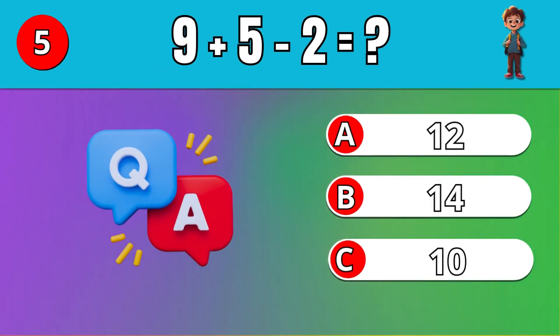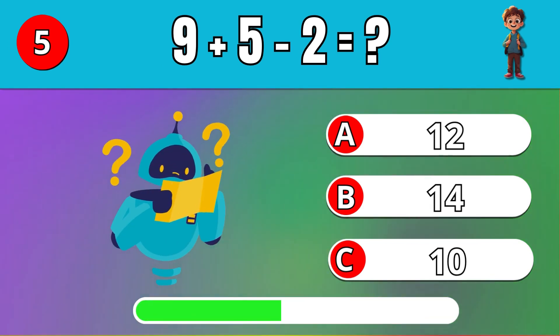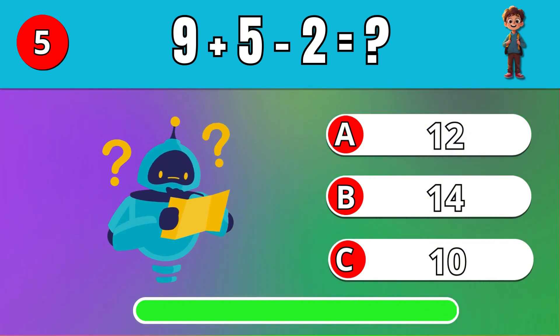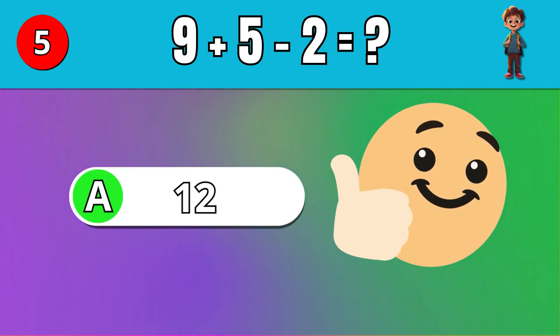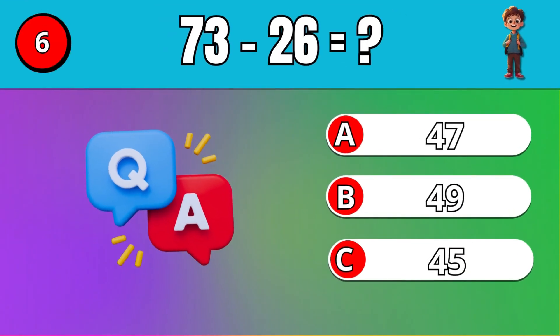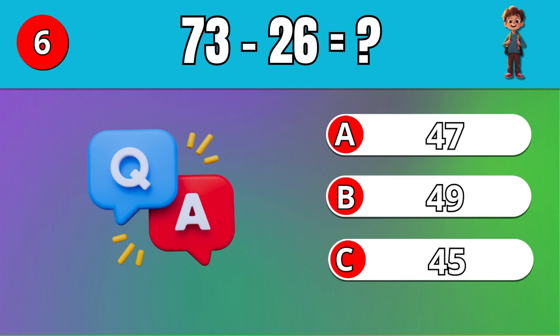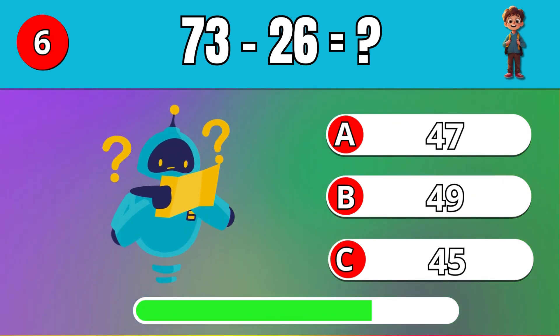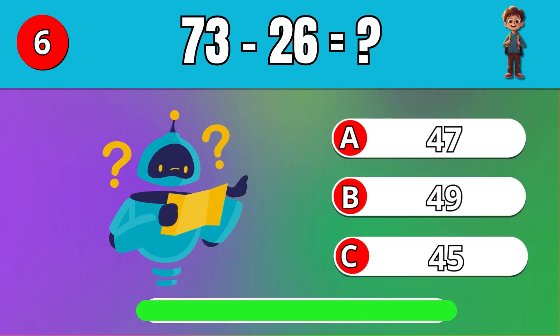What is 9 plus 5 minus 2? A, 12. What is 73 minus 26? A, 47.